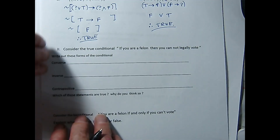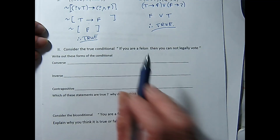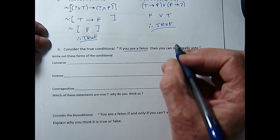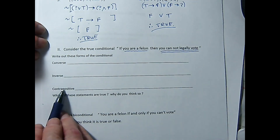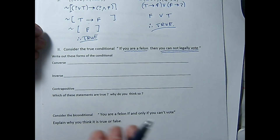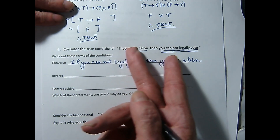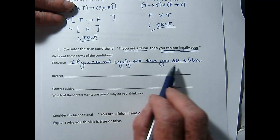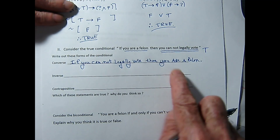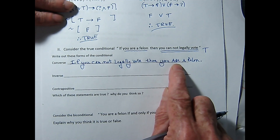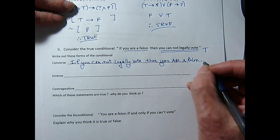Now we're going to play with conditionals. In Texas, this is a true statement: if you are a felon, you cannot legally vote. We're going to write the converse, inverse, and contrapositive, and then decide which of those are true. I've written the converse — I switched the hypothesis and conclusion. It then says, if you cannot legally vote, then you are a felon. While the conditional was true, the converse is false. There are lots of people who cannot legally vote, but they aren't felons. In fact, you cannot legally vote, being as you're only 15 years old, but you're not a felon. So we've got to consider that a false statement.